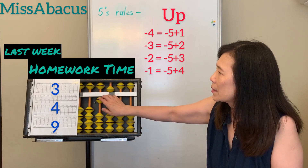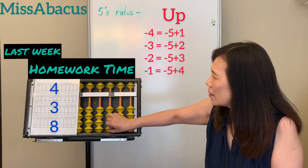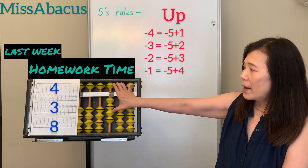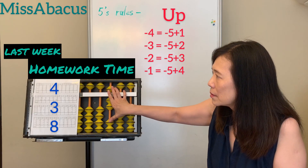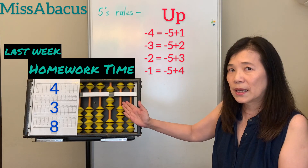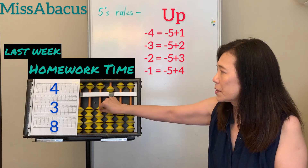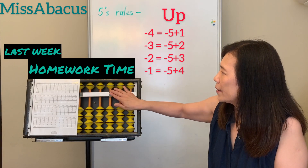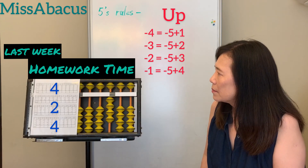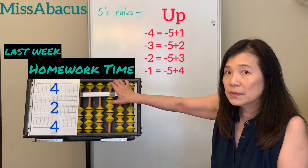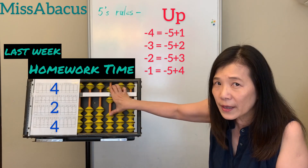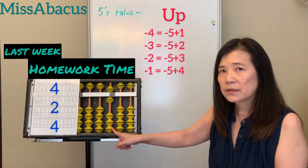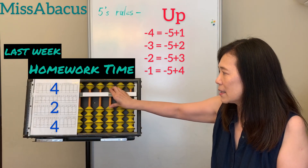Next: 4 plus 3 — use 5, down 1, 2. Then plus 8: 10's rule — minus 2, plus 10. Answer: 15. Then 4 plus 2: down 5, down 3. Plus 4: only have 3 left — 10's rule: minus 6, plus 10. Answer: 10.